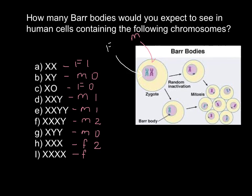It's called tetra X syndrome, and only 100 cases in the whole world are registered. This phenotype would produce three Barr bodies.